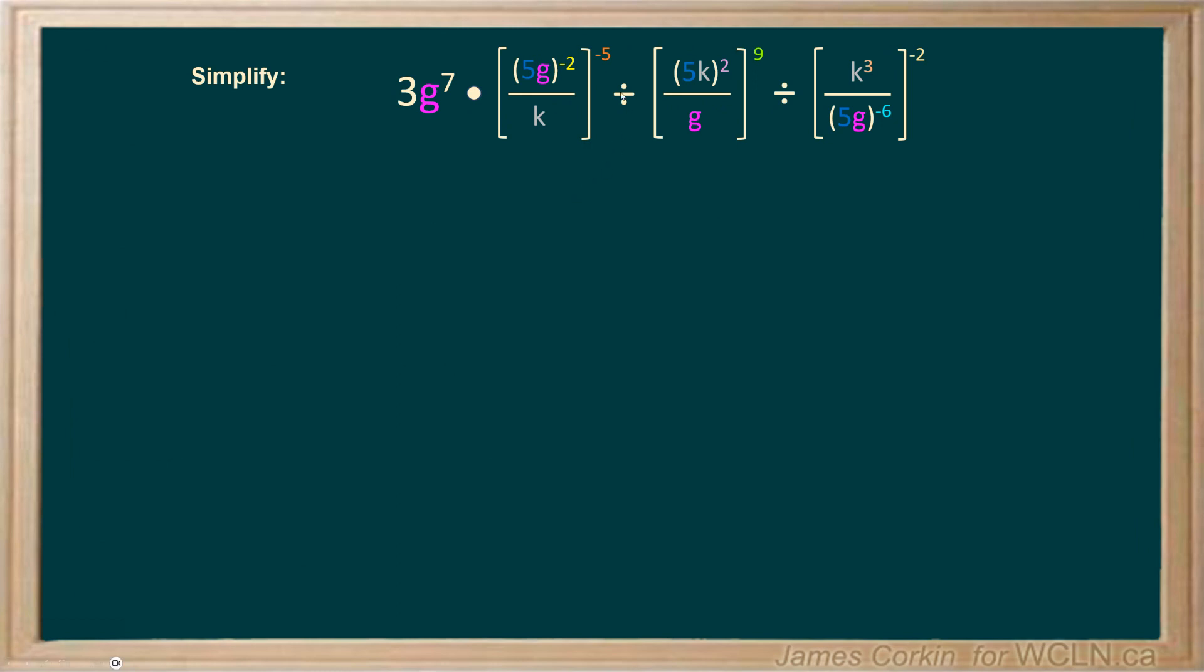What I recommend you do first is identify any overall negative exponents outside of brackets. What you want to do is take those negative exponents and make them positive. The effect that has on the inside is you simply flip the fraction. You can see the K has moved from denominator to numerator and this expression has moved to the denominator.